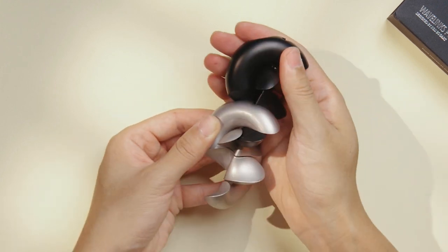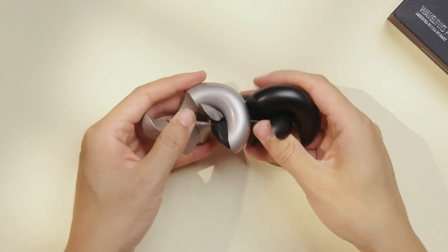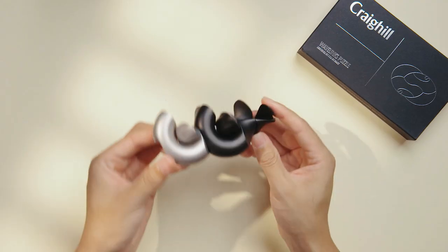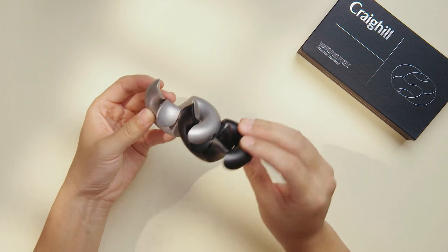And you just follow the rotation out, and there we go. We are back to the pre-assembly forms. And that's how to assemble and disassemble the wavelengths puzzle.